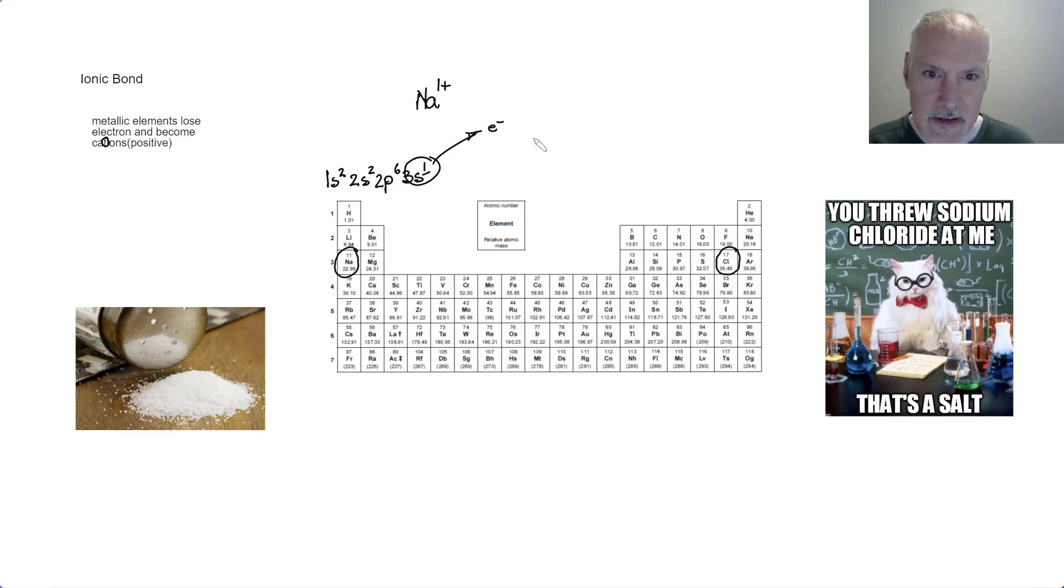Now where does that electron end up going? Let's take a look at chlorine. It's 1s², 2s², 2p⁶, 3s², 3p⁵.